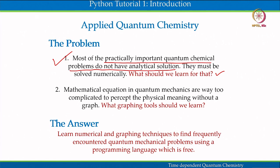As the proverb goes, a picture is worth a thousand words. Graphs are the best way of portraying the physical concept behind a mathematical expression. Therefore, to make the study of quantum mechanical systems practically useful and to make the learning process comfortable, blackboard or PowerPoint presentation of quantum mechanics must be supplemented by computer programming-based graphing tools. This is true both for time-independent and time-dependent versions of quantum mechanics. Even when I have analytical solutions in quantum mechanics, these solutions are often too complicated to perceive the physical meaning without a graph. The question is: how do I use different graphing tools to portray the physical concept behind a quantum mechanical system?